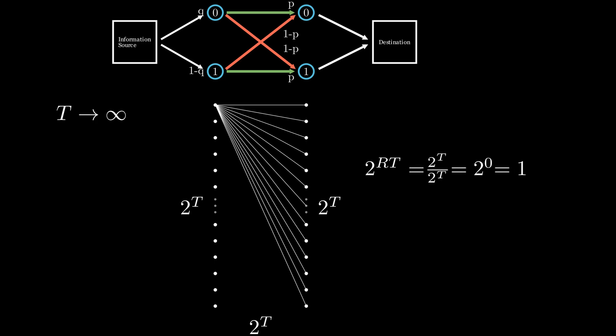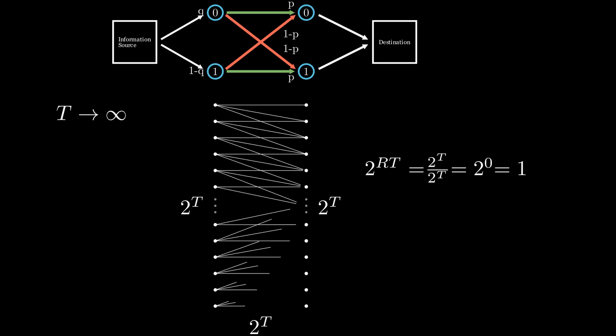And as you might have already guessed, we are going to do the same trick as before. We pick a very small error rate that we are satisfied with, and we prune out the connections between the messages that have such low probability that they will almost certainly never happen. Then, we just use the input messages that map to unique output messages.